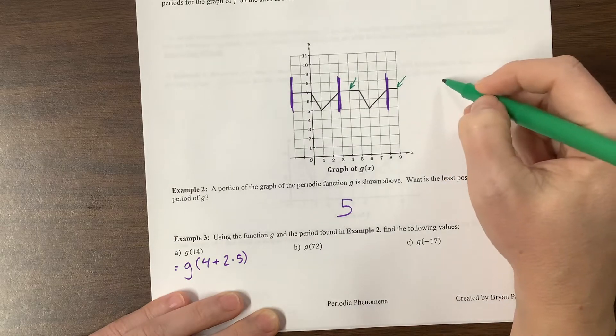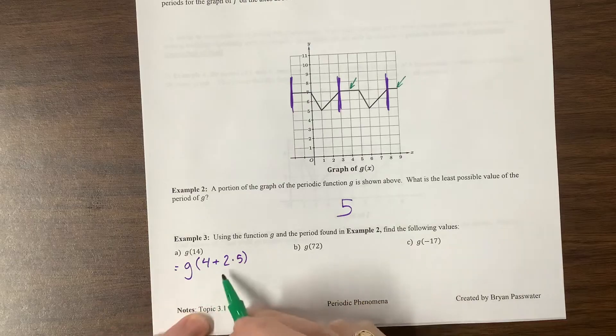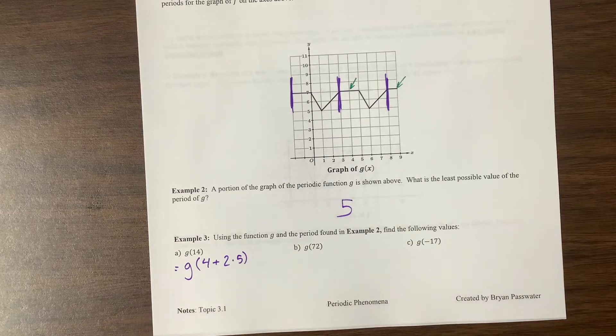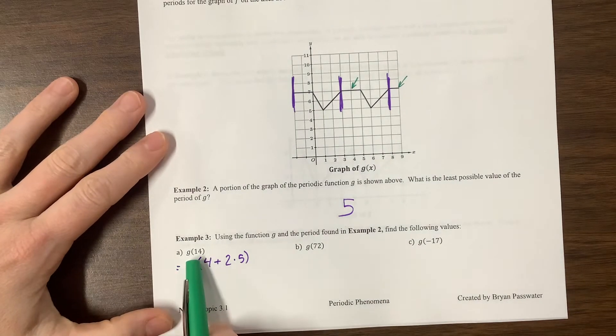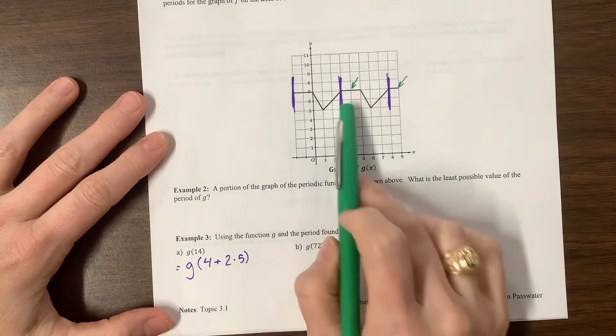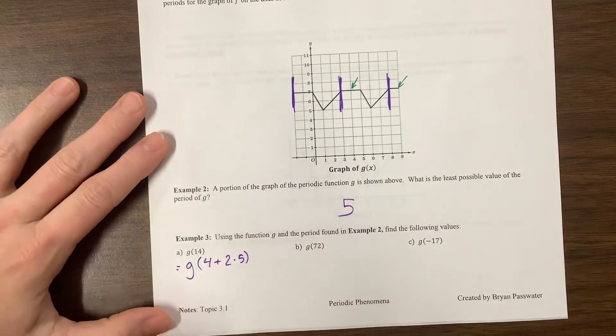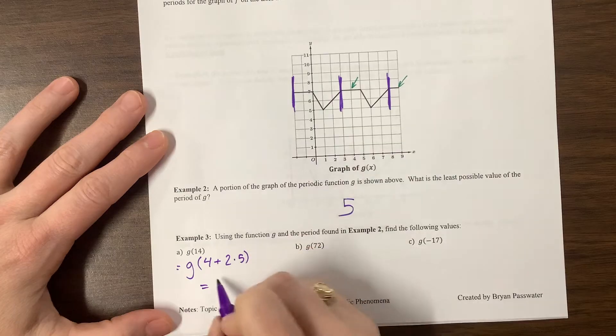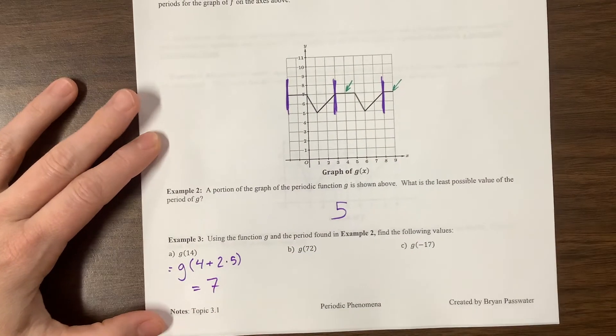And then it'll happen again 5 more units later, which is at 14. And so what's happening at g of 14 is the same thing that's happening 14 minus 5 minus 5. Or even stopping here at 9 is great. And so what's that value? That value was, it had a y value of 7.